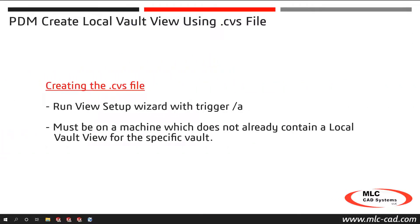The first step to creating a CVS file is to run the view setup wizard with the trigger /A on a machine that does not already have a local vault view for that specific vault. If the machine already has a local vault view, then you will need to delete that local vault view before continuing.